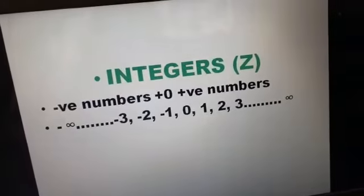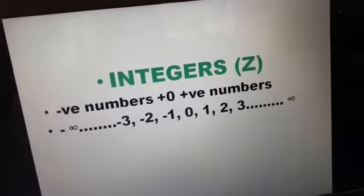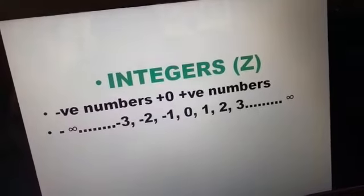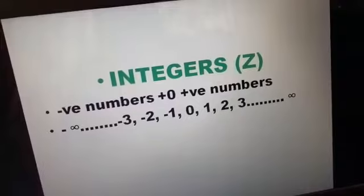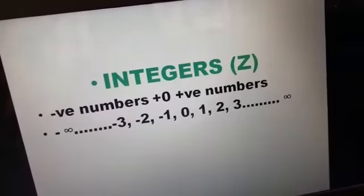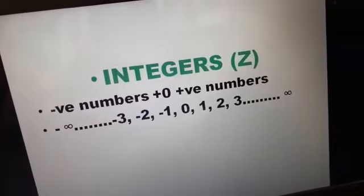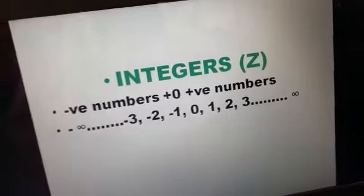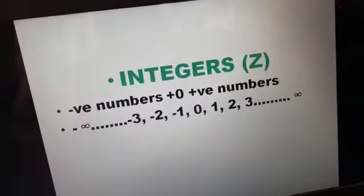Next is integers. Negative numbers, zero, and positive numbers are together called integers. You can see that when we move left on the number line, we get all negative numbers, and to the right are positive numbers. All together, they are called integers.